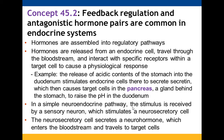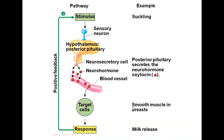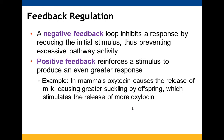In a neuroendocrine pathway, a stimulus is recognized by a sensory neuron, which stimulates a neurosecretory cell. That cell secretes a neurohormone that travels through the bloodstream to its target. For example, a baby suckling is the stimulus, which triggers a sensory neuron and releases oxytocin from the posterior pituitary via a neurosecretory cell. Oxytocin reaches its target — smooth muscles in the mammary glands — causing milk to be released. This is an example of positive feedback. Negative feedback inhibits a response, while positive feedback reinforces it.